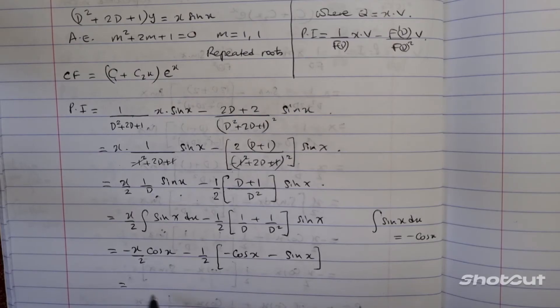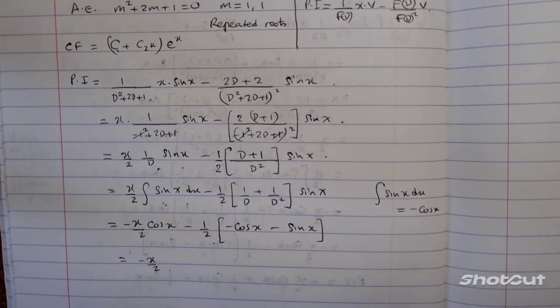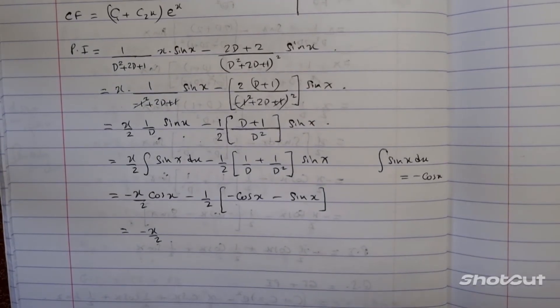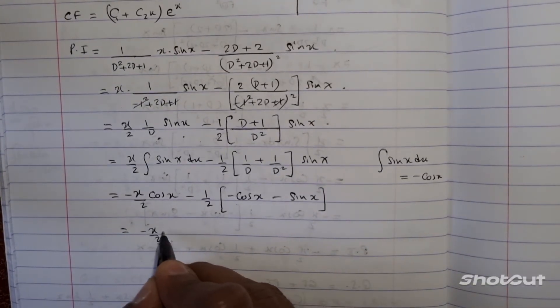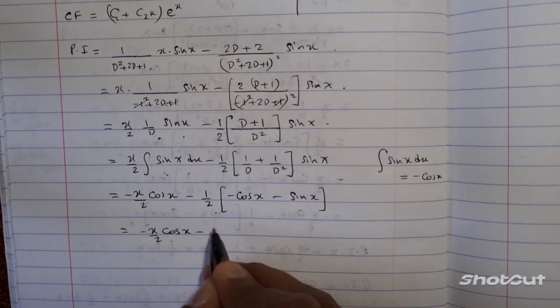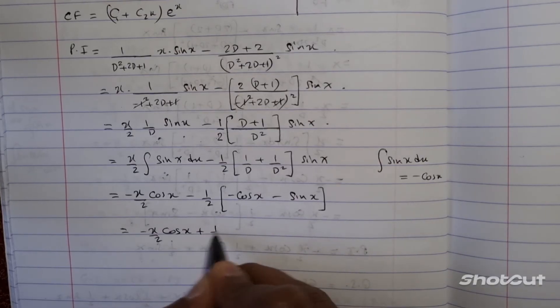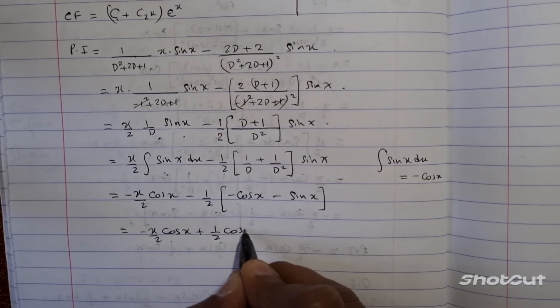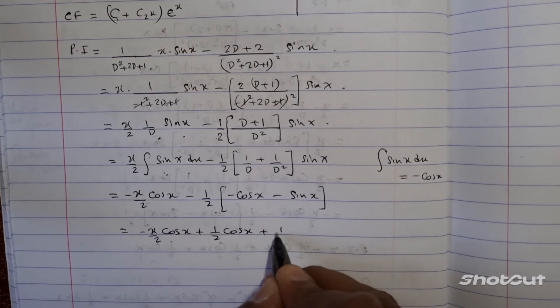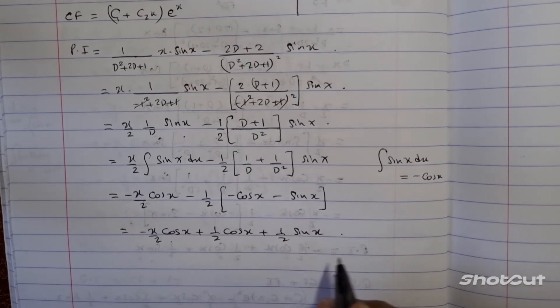And therefore, simplifying further, let's pull this a little bit up, x minus x over 2 cos of x minus minus becomes plus half cos of x plus half sine of x.